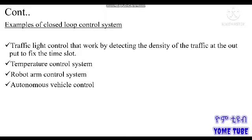Let's look at the example of a traffic light control system that works by detecting the density of the traffic at the output to fix the time slot. The time slot can be changed based on the current traffic density.